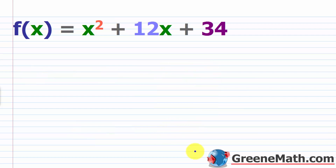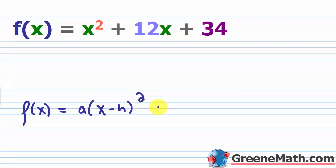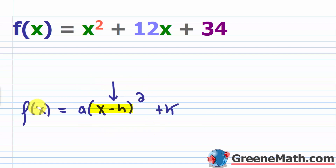What we need to understand for today's lesson is how to go from standard form — for example, f(x) = x² + 12x + 34 — into vertex form: f(x) = a(x − h)² + k. Notice that this is a binomial that's squared. Earlier in the course we talked about the fact that if you have a binomial squared, you get a perfect square trinomial, which factors back into a binomial squared.